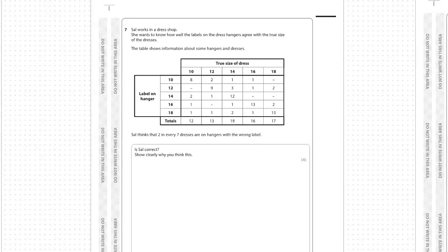Sal thinks that two in every seven dresses are on hangers with the wrong label. Is Sal correct? Show clearly why you think this. Breaking this down, this is a comparison question, so the answer will involve a comparison about the totals that we generate from the information in the question compared to Sal's thinking at two in every seven dresses or hangers with the wrong label.